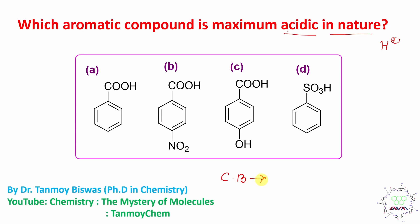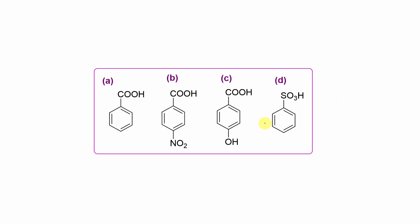Remember one rule: more the stability of the conjugate base, more is the acidity. Conjugate base means if you remove the proton, whatever anionic part is remaining. If you look at this case, there are two types of functional groups: one is carboxylic acid attached to benzene and another is sulfonyl acid attached to benzene.